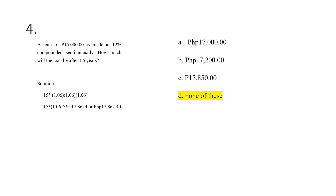For number four, a loan of ₱15,000 is given compounded interest at 12% compounded semi-annually, meaning interest is imposed every six months. For the loan value after 1.5 years, we impose 6% compounded interest three times. So: 15 times 1.06 times 1.06 times 1.06 gives us 17.8624, or a final value of ₱17,862.40.